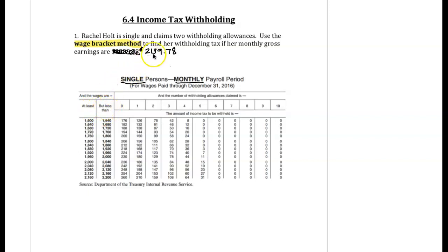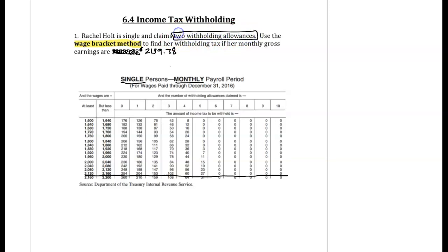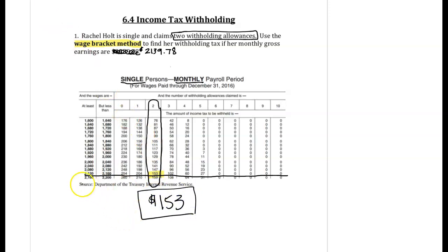We're trying to find where $2,139.78 fits. It's bigger than $2,120 but smaller than $2,160, so I'll highlight that row. It said two withholding allowances, so we find that column — zero, one, two withholding allowances. Where the row and column intersect gives us $153. That's all we need for question one: find the correct row, the correct column, and where they intersect.